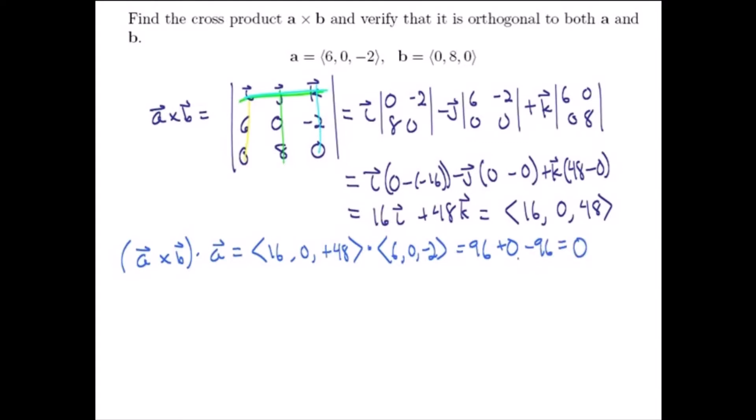So A cross B is orthogonal to A, again, because their dot product was 0. Let's check A cross B and B.